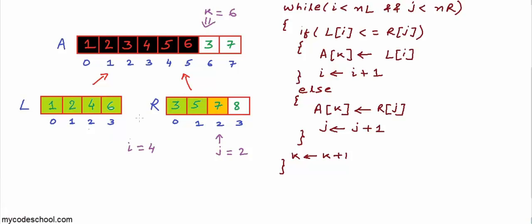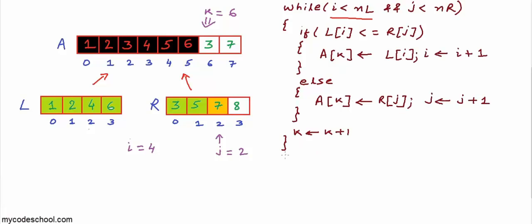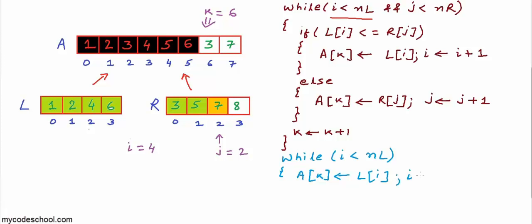After 6 has gone, we are done with all elements in L. i is equal to 4 now, which is not a valid index. So in the while loop, the condition 'while i less than number of elements in L' becomes false — this is one probability where one of the arrays L or R exhausts first. In that case we need to pick all elements from the other array. After the main while loop, we write: while i is less than nL, check for leftovers in L, do A[k] = L[i], and increment i and k.